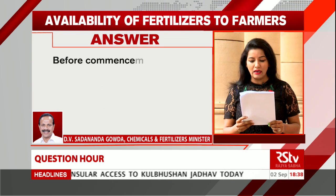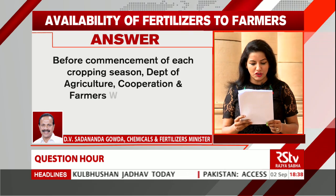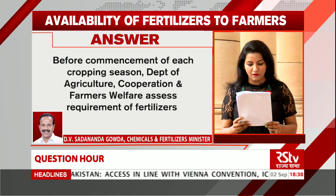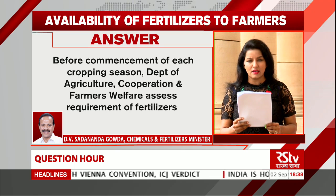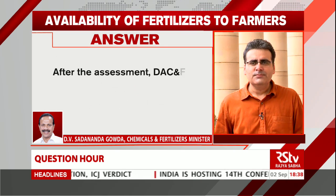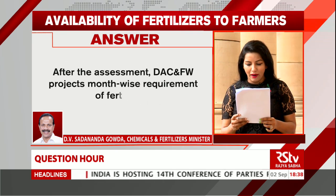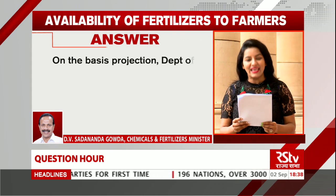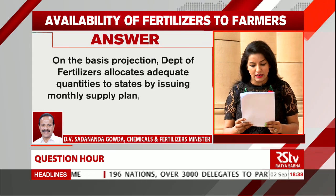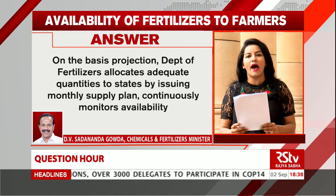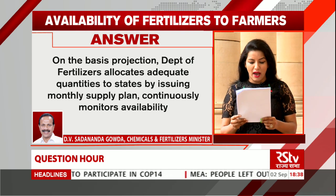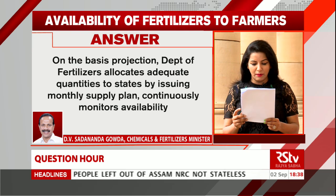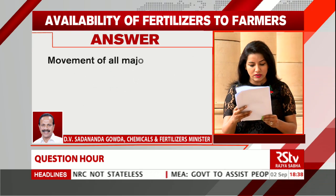Before the commencement of each cropping season, the Department of Agriculture, Cooperation and Farmers Welfare, in consultation with all state governments, assesses the requirements of fertilizers. Based on this assessment, it projects month-wise requirements, and the Department of Fertilizers then allocates adequate quantities to states by issuing monthly supply plans, and continuously monitors availability.